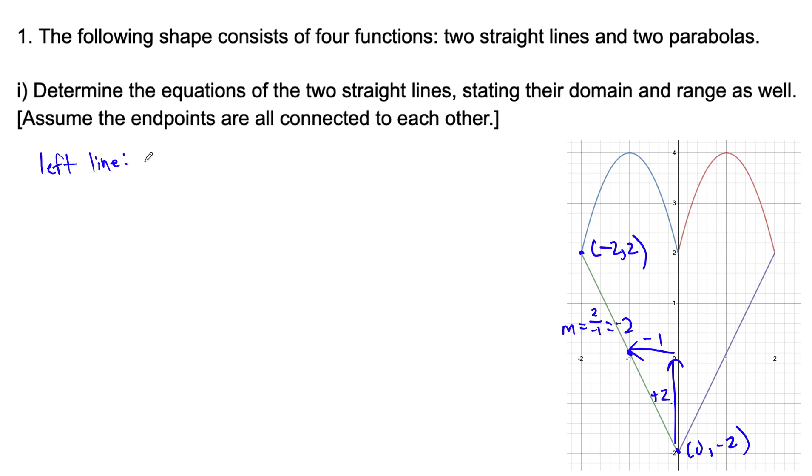So the slope is -2. We can also identify the y-intercept, which is already right there, which is -2. So we'll refer to that as b = -2, b representing the y-intercept. Therefore, y = -2x - 2. That's just coming from the equation y = mx + b.